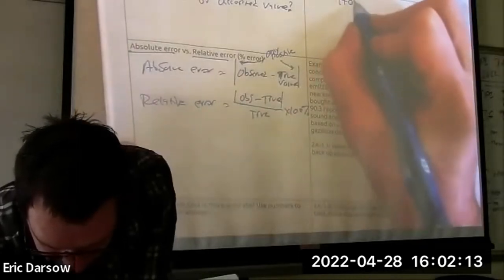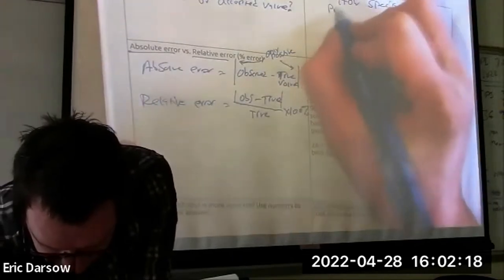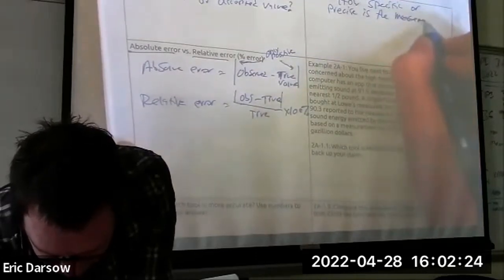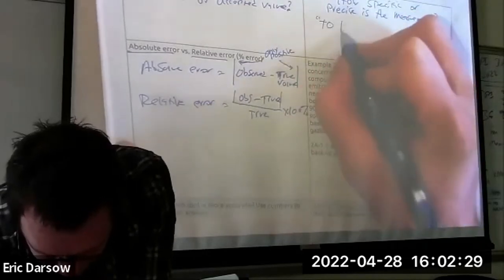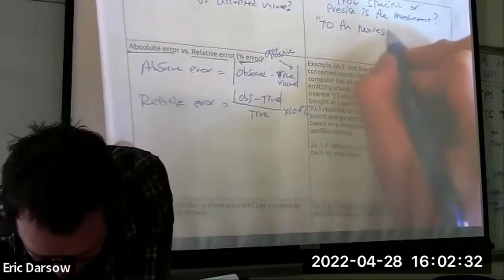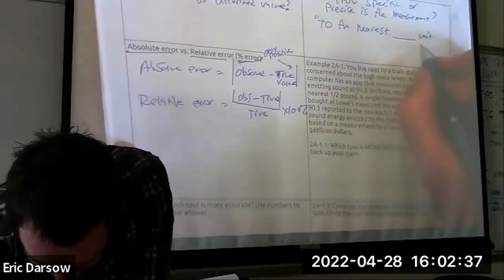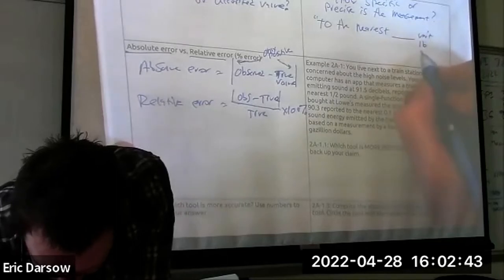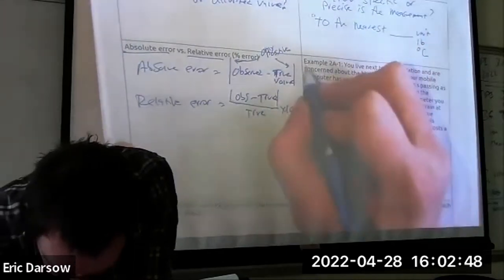Precision, on the other hand, is how specific a measurement is — how specific or precise the measurement is. This is usually stated as 'to the nearest something' in the unit of your tool — to the nearest blank unit. It could be a scale that measures to the nearest pound, or a thermometer that measures to the nearest tenth degree Celsius.